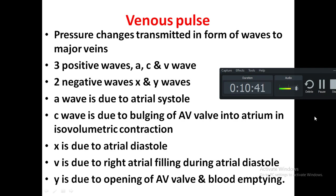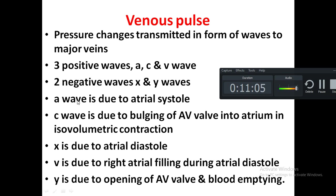Pressure changes transmitted in the form of waves to the major veins are called the venous pulse. There are three positive waves: the A wave, C wave, and V wave, and two negative waves called the X wave and Y wave.